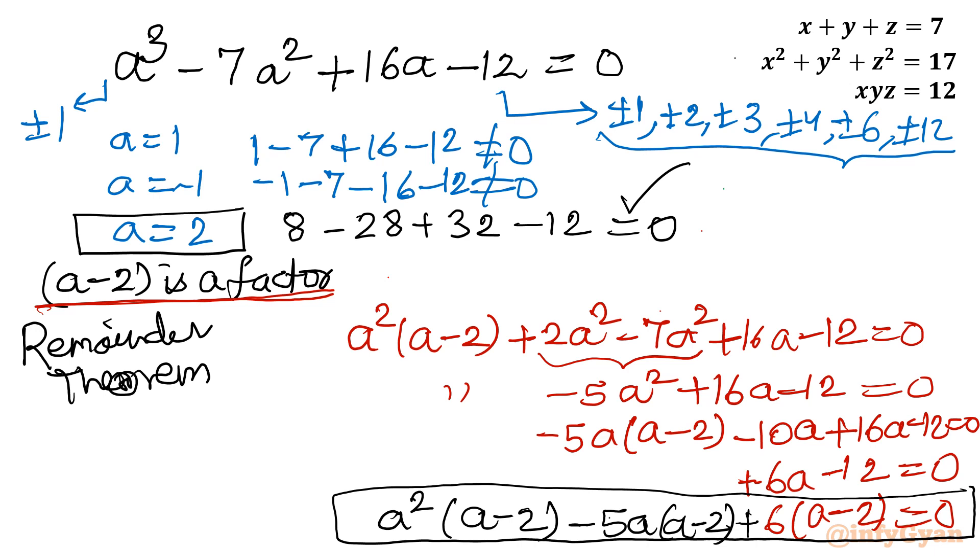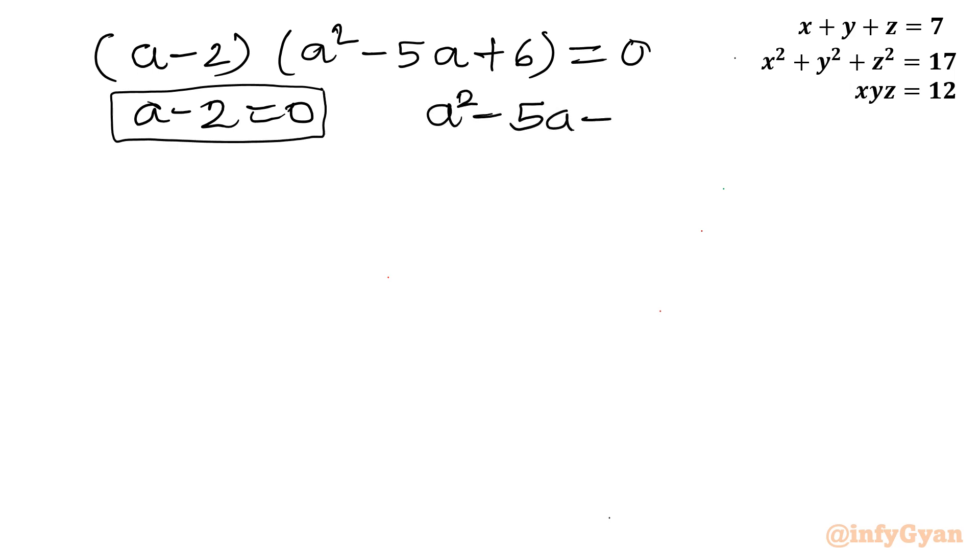So I will write here a minus 2, a square minus 5a plus 6 equal to 0. f dot g equal to 0, so either a minus 2 equal to 0 or this quadratic equation a square minus 5a plus 6 should be 0.